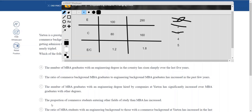Let's come to option D. The proportion of commerce students entering other fields of study than MBA has increased. Yet again is out of scope. We do not know anything about other fields of study. We only know about commerce students taking MBA in Yarton. It's very specific. The passage is very specific. So this is an easy to eliminate option.